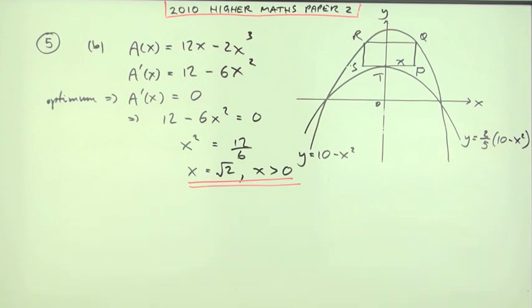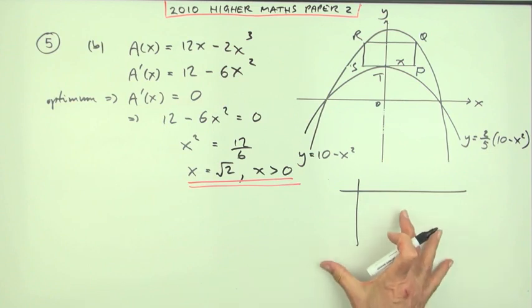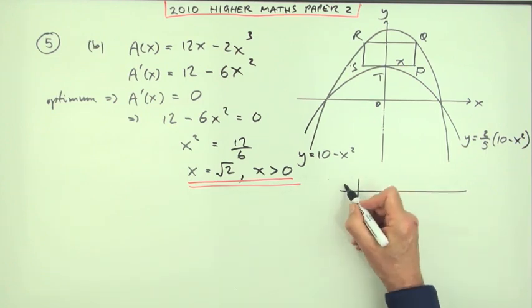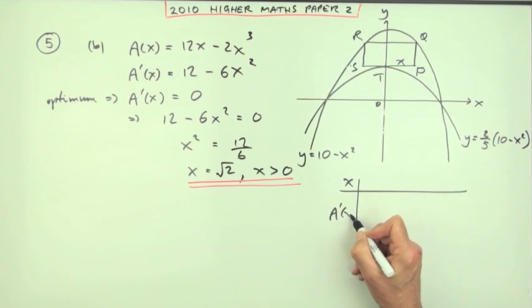And even though it's said in the question, find the maximum area, you still have to justify whether it's a maximum or a minimum. And the usual way that you would do that in the Higher would be by making up what's known as the nature table. And don't skimp on the nature table. There is only one mark, but if all the appropriate parts aren't there, you won't get that mark.